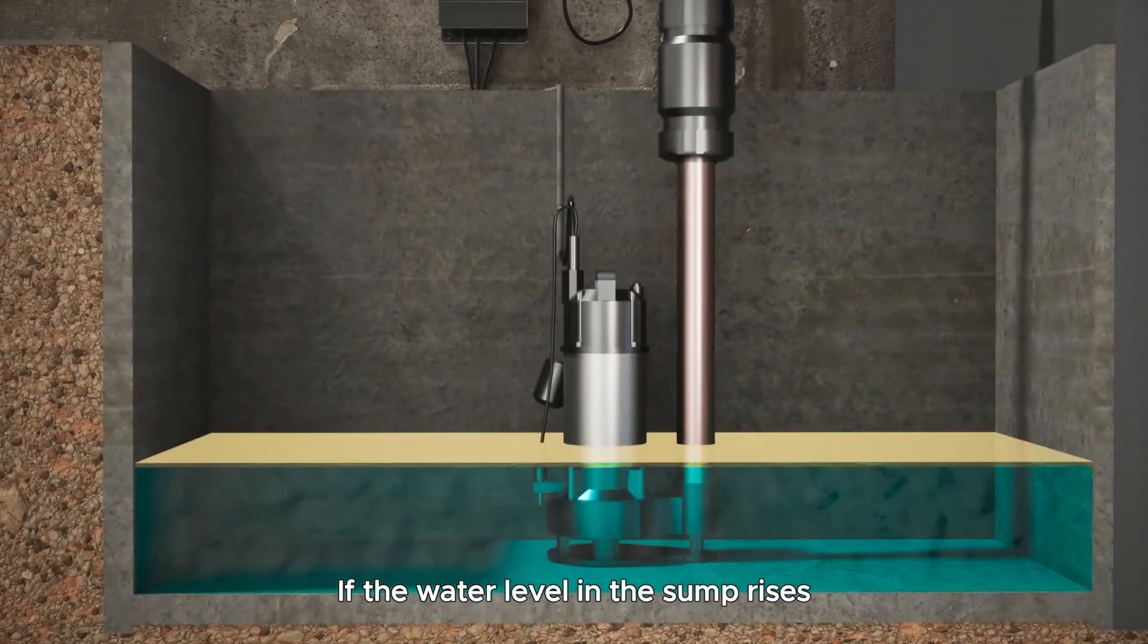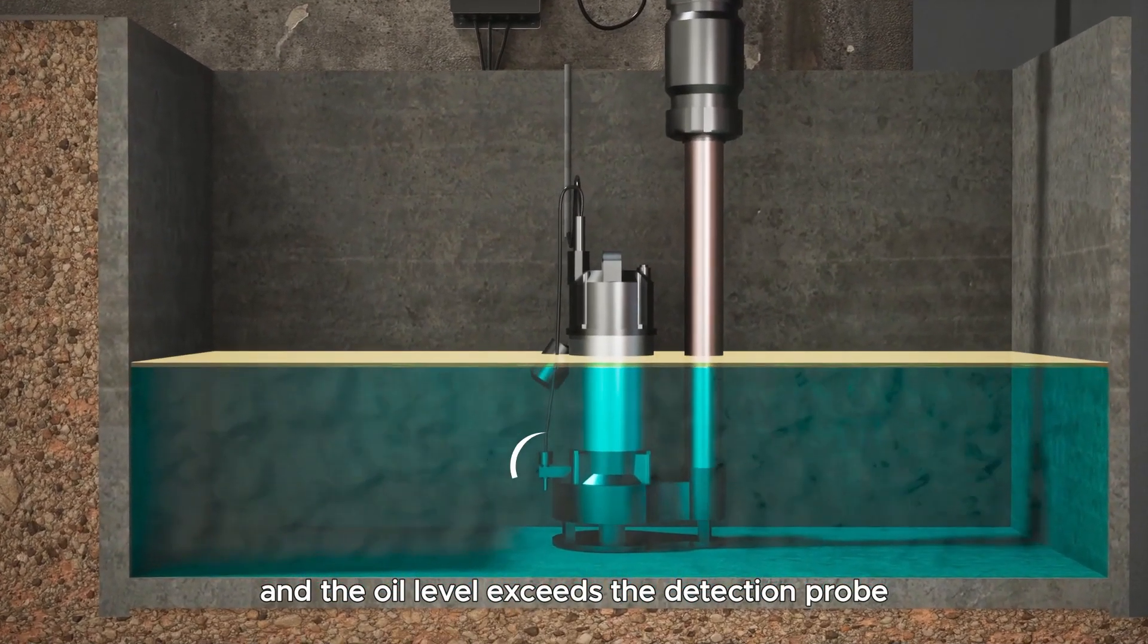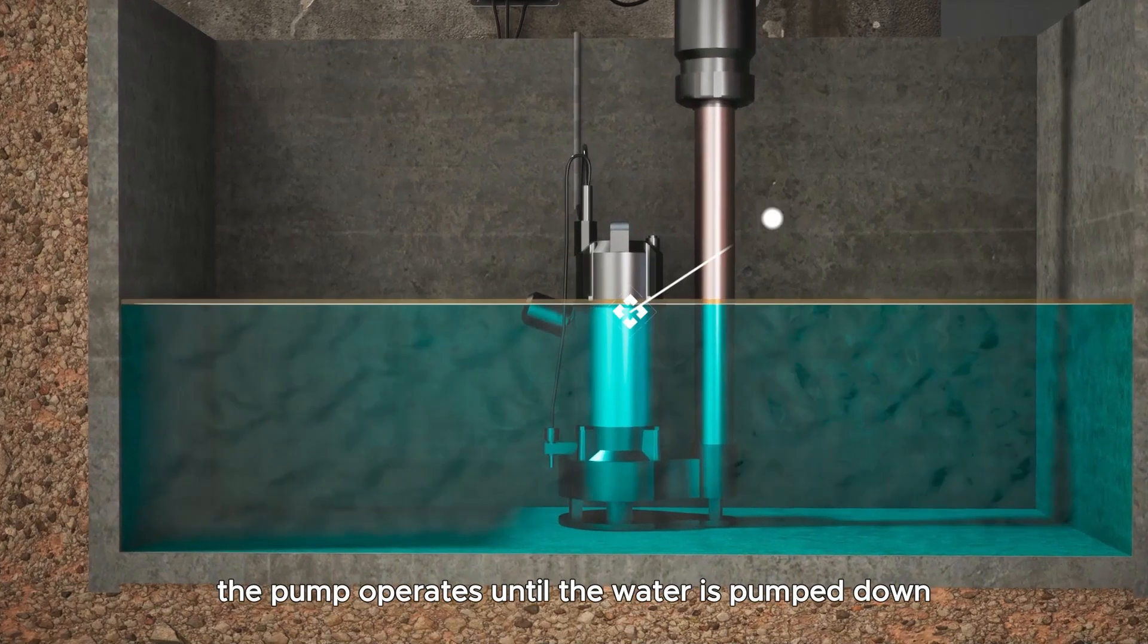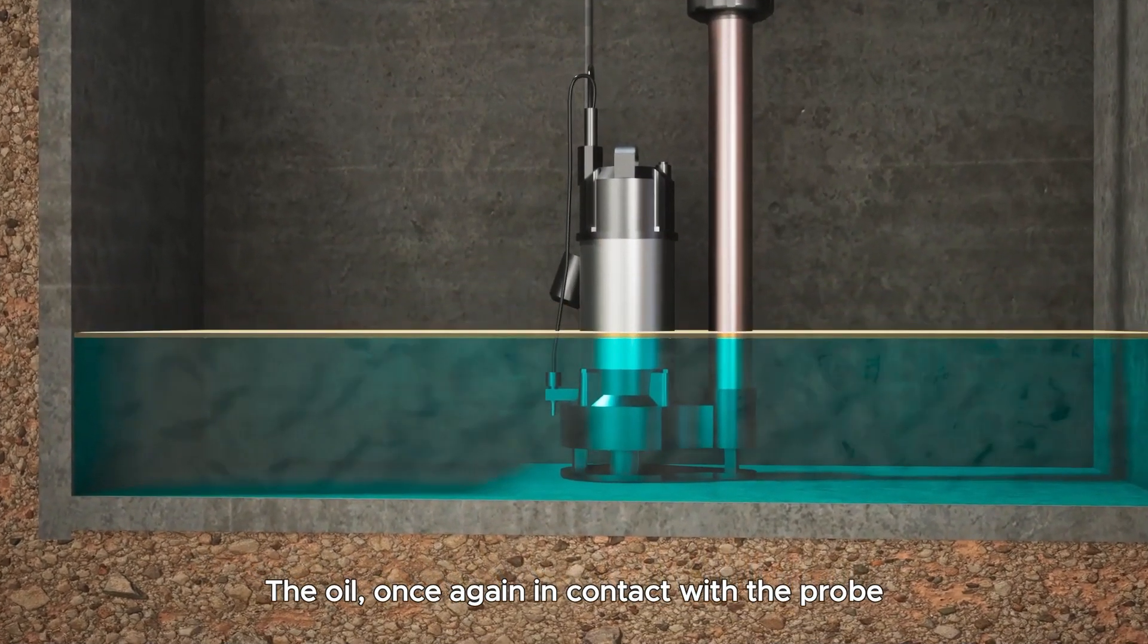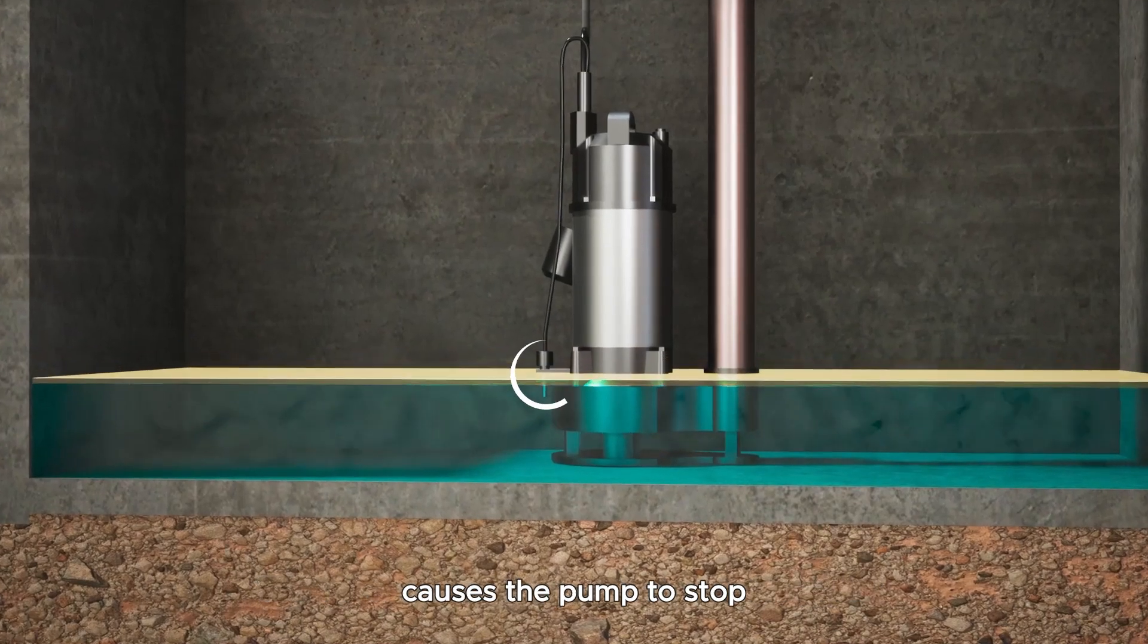If the water level in the sump rises and the oil level exceeds the detection probe, the pump operates until the water is pumped down. The oil, once again in contact with the probe, causes the pump to stop.